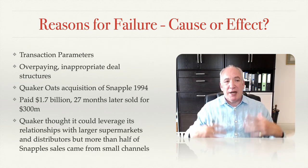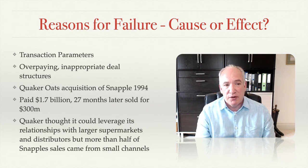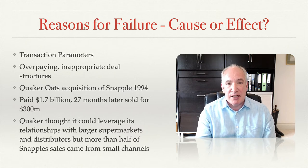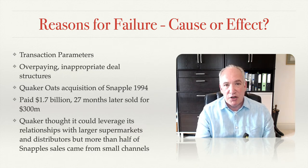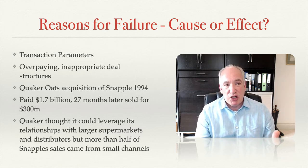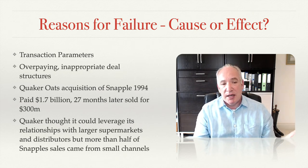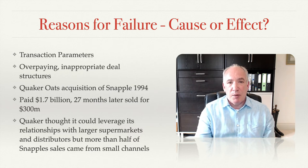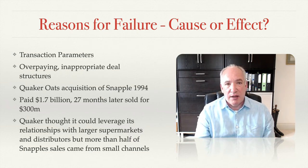Transaction parameters can be quite broad — essentially either overpayment or inappropriate deal structures. The Quaker Oats acquisition of Snapple in 1994 is a strong example. Quaker Oats paid $1.7 billion for a company with revenues of $700 million; when they sold it 27 months later, revenues had fallen to $500 million and they sold it for $300 million — a net $1.4 billion of value destruction in 27 months. Quaker thought it could leverage its supermarket relationships, but more than half of Snapple's sales came from small channels, and the two things simply didn't work.